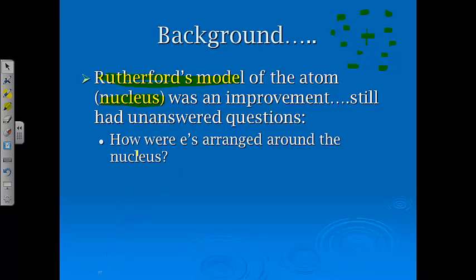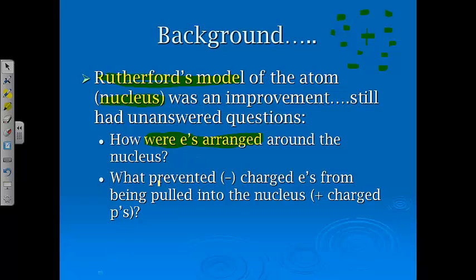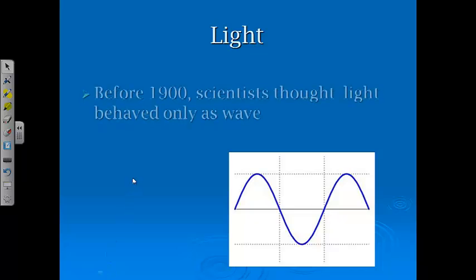But there were two very important unanswered questions. Number one, how were the electrons arranged? Was it really random? Was there a pattern to them? Secondly, what prevented the negatively charged electrons from being pulled into the nucleus, which is positively charged? And those were the two big questions that were driving things at that point in time. In order to answer these questions, we have to back up and talk about light.